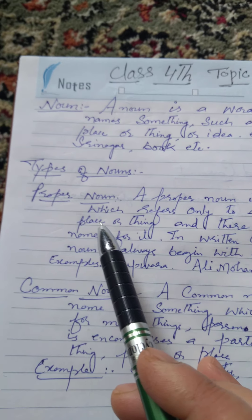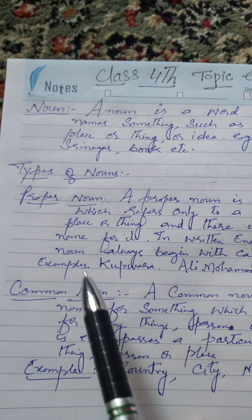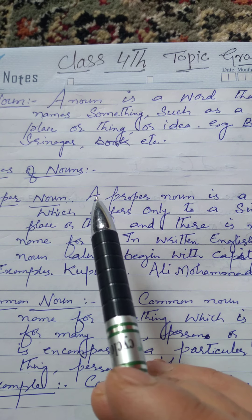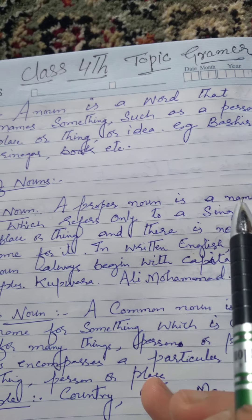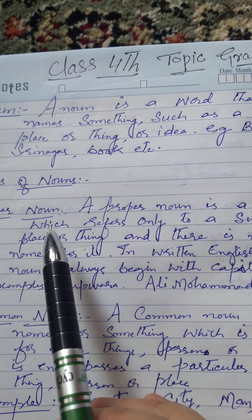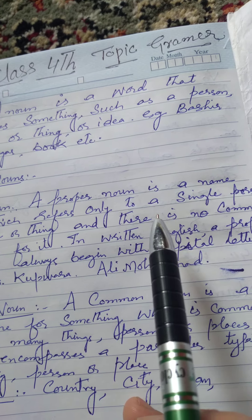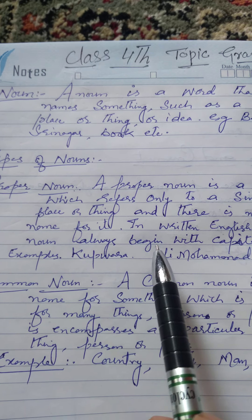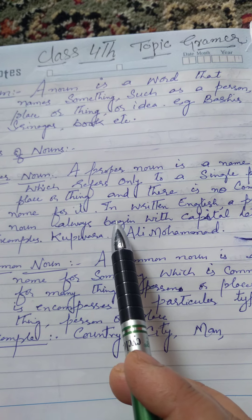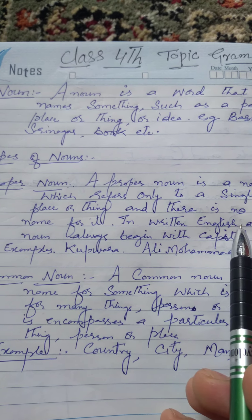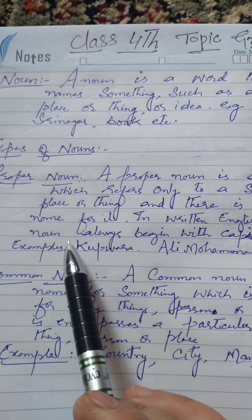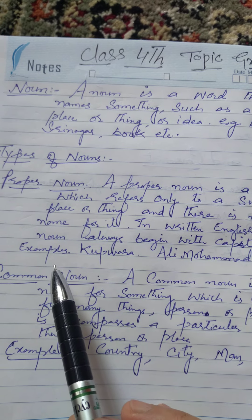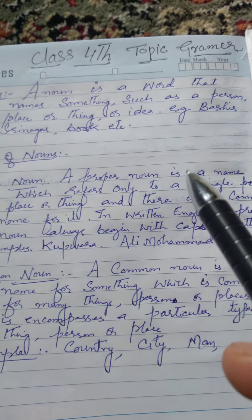Types of nouns — after the type of nouns, we have proper nouns and common nouns. A proper noun is a name which refers only to a single person or place. In written English, a proper noun always begins with capital letters. Examples: Kofara, Ali Mohamed, Shabir Ahmed, Bashir Ahmed.